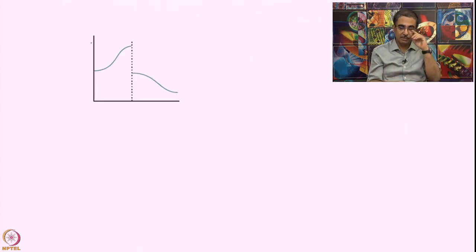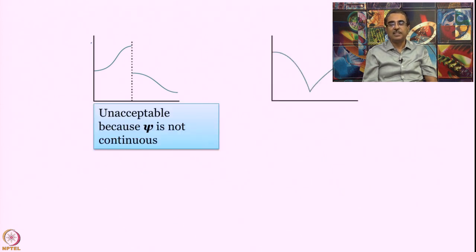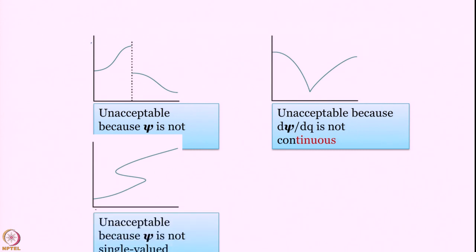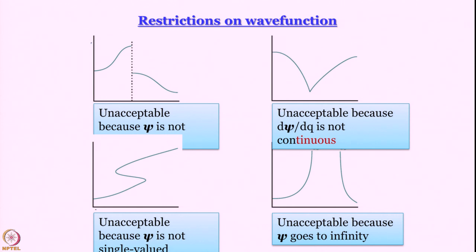Let me show you some examples of unacceptable wave functions. This one is unacceptable because it is not continuous — it is like sin theta over theta, but the same value is not obtained approaching from the left and from the right. Another function is unacceptable because del psi del q is not continuous, though given a particular system, something like this might become acceptable as we will see. This one is definitely not acceptable because it is multivalued — not single-valued. And this is not acceptable because psi goes to infinity.